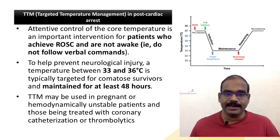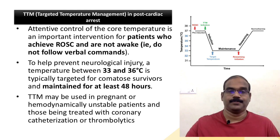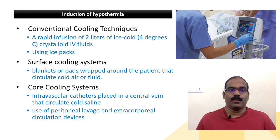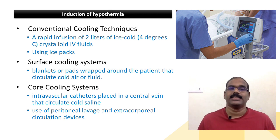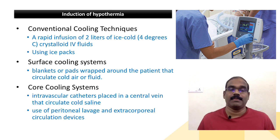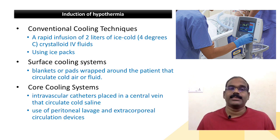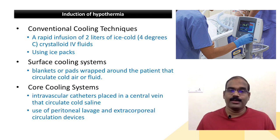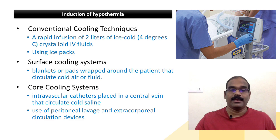TTM may be used in pregnant or hemodynamically unstable patients and for those being treated with coronary catheterization or thrombolytics. There are three classes of methods for induction of hypothermia: conventional cooling techniques — rapid infusion of 1 to 2 liters of ice-cold (4 degrees Celsius) crystalloid IV fluids or ice packs; surface cooling systems — blankets or pads wrapped around the patient circulating cold air or fluid; and core cooling systems — using a central venous cannula to circulate cold saline, peritoneal lavage, or extracorporeal circulation devices.